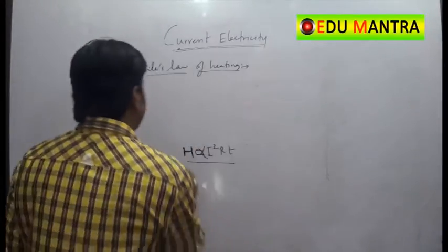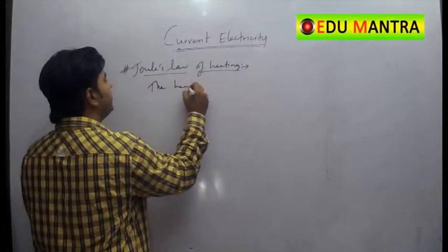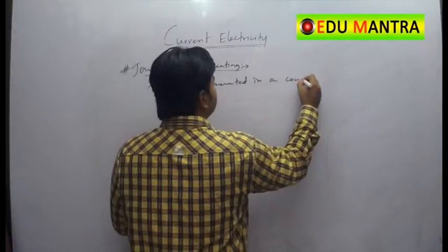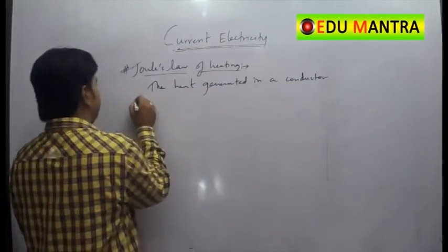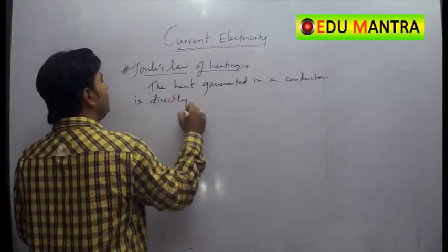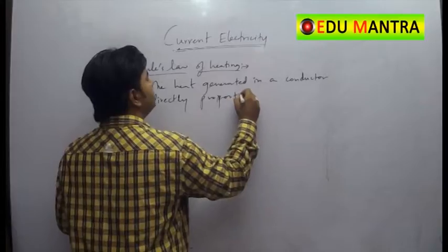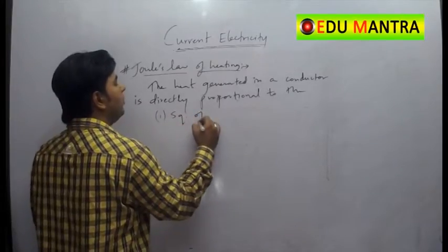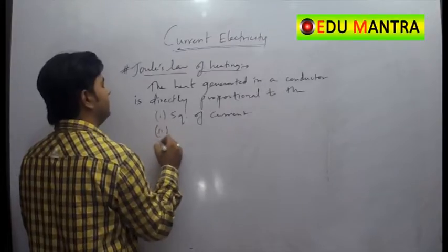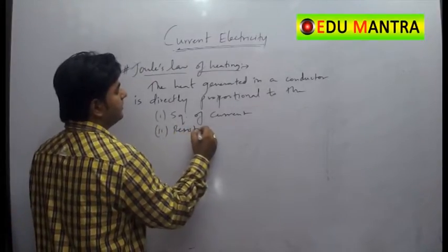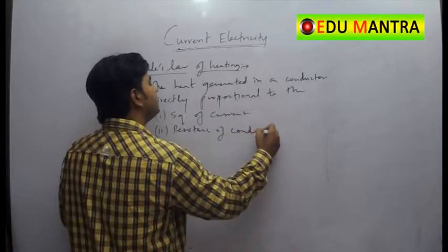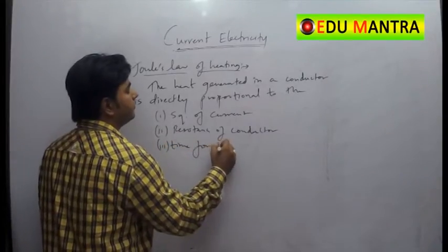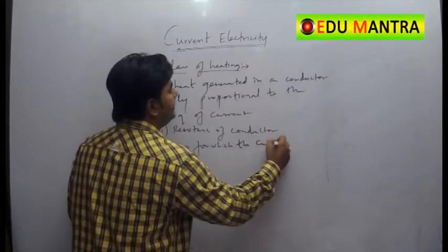So it can be stated as the heat generated in a conductor is directly proportional to the square of current, resistance of conductor and time for which the current is passed.